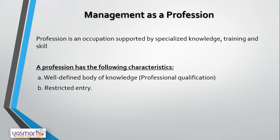For example, to become a chartered accountant in India, one has to pass the prescribed examination conducted by the Institute of Chartered Accountants of India. The third characteristic is professional association. All professions are affiliated to professional associations. These associations regulate the entry, issue certificates of practice, and formulate and enforce a code of conduct on their members. For example, to practice in India, a lawyer should be a member of the Bar Council of India, and a doctor should be a part of the Indian Medical Association.